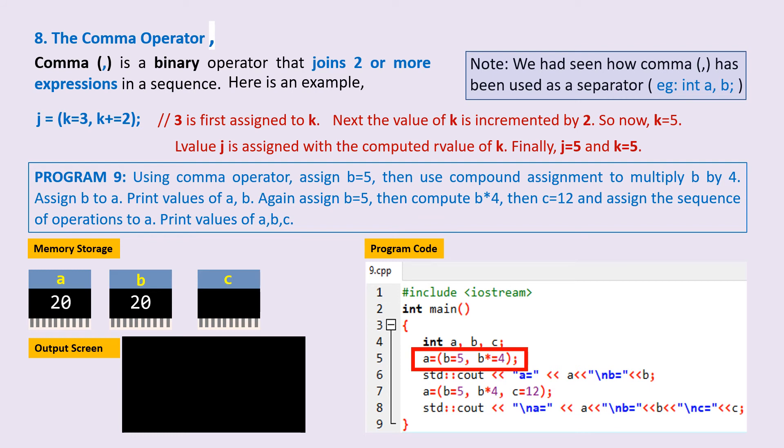On the next line is the cout statement, which first prints the value of a, and then using backslash n character, it prints the value of b onto the next line. We next have line 7 with another similar statement.